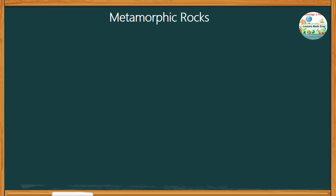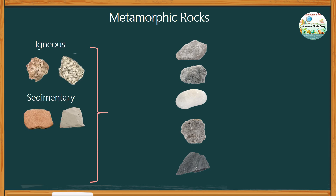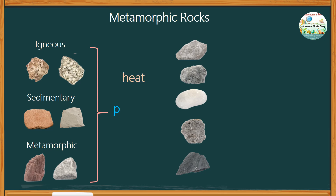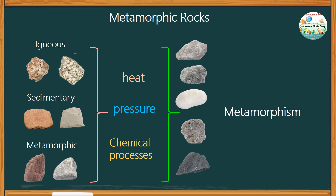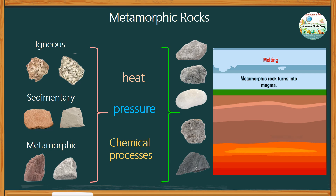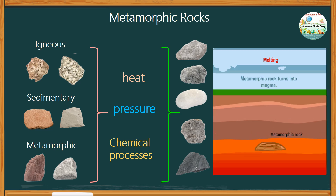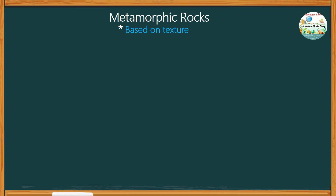What do you know about metamorphic rocks? Metamorphic rocks form when existing igneous, sedimentary, or even other metamorphic rocks change due to heat, pressure, or chemical processes. This transformation is called metamorphism. High temperatures cause minerals in the rock to re-crystallize — the chemical composition remains the same, but the crystal structure changes. Intense pressure from tectonic plate movements causes rocks to become denser and more compact, and layers may become folded or distorted, forming foliated textures.